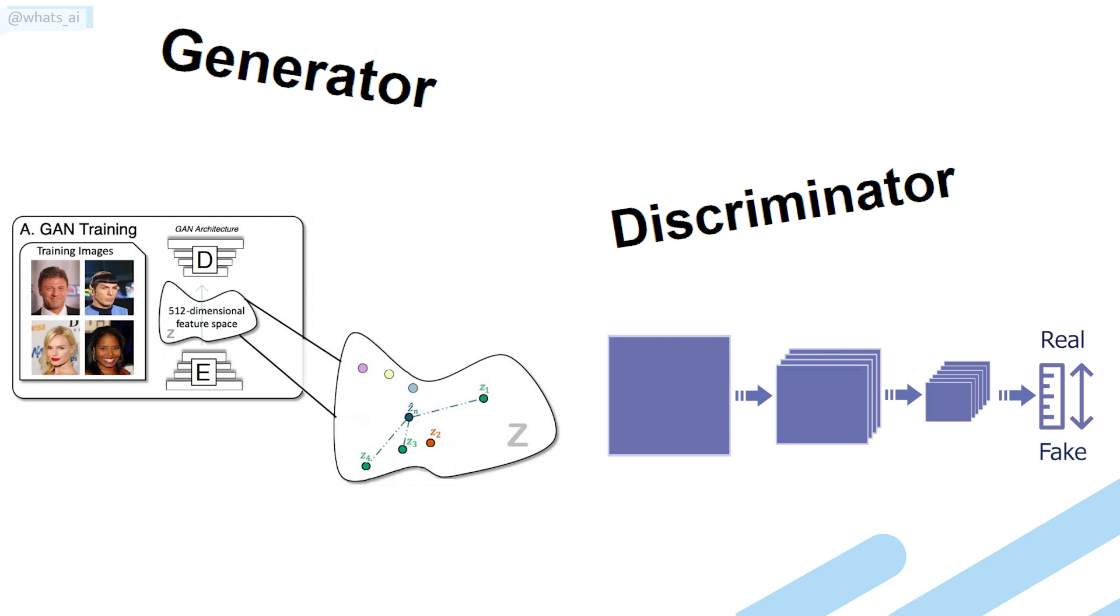This process is repeated over and over until the Discriminator is fooled half the time, meaning that the generated images are very similar to what we have in our real dataset. So the Generator images now look like they were picked from our dataset, having the same style. If you'd like more details on how a Generator and Discriminator model work and what they look like from the inside, I'd recommend watching one of the many videos I made covering them, like this one appearing on the top right corner right now.